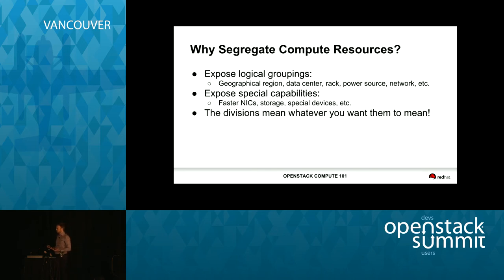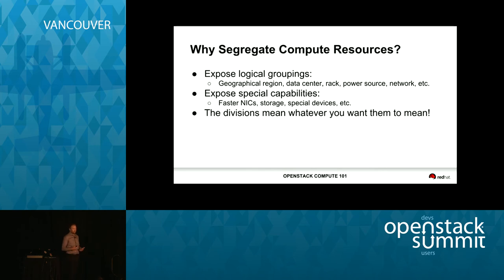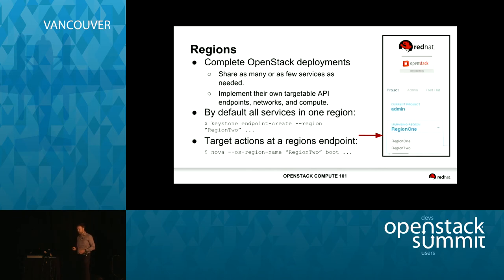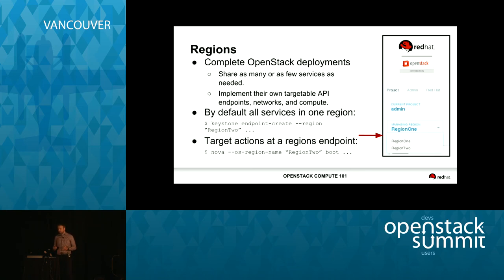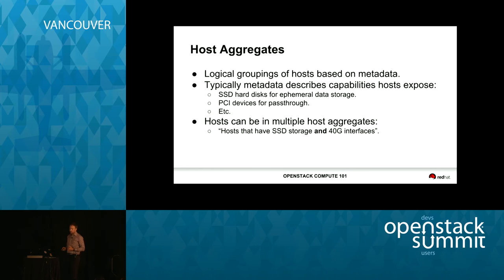Segregation of compute resources means exposing logical groupings of compute hosts based on geographical region, data center, special capabilities like high-performance NICs or storage, and so on — the divisions mean whatever the admin wants them to mean. One way of doing this is using regions: you share as few or as many services as you want between regions, typically just Keystone and Horizon. They implement their own targetable API endpoints, meaning that as a user I have to specify which region I want to talk to when scheduling instances — either on the command line specifying the region name, or using the drop-down in the Horizon dashboard.